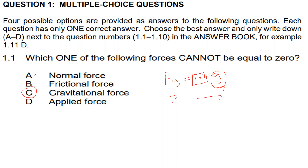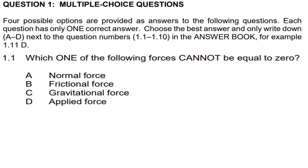Normal force can be zero if the object is not touching a surface. Normal force depends on the object's connection to a surface. If you have a box on a table, you have normal force opposite to gravitational force. Gravitational force comes from the center of the object. Normal force acts from the surface at the connection point. Frictional force can be zero if the coefficient is zero, and applied force can of course be zero, but gravitational force never. Answer to 1.1 is C.